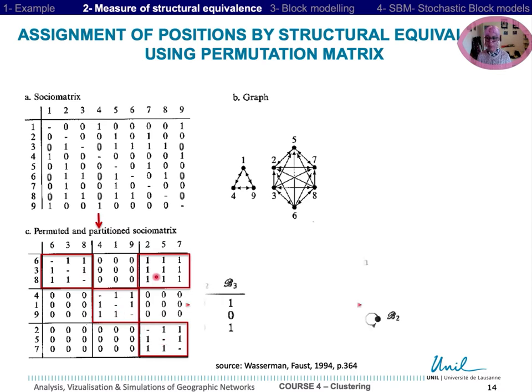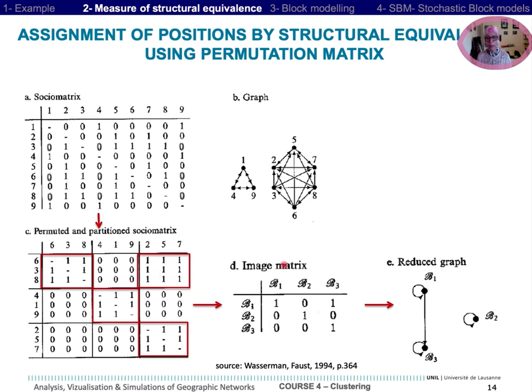One builds an image matrix about multi-relational networks between positions, rather than information about individual actors, and then we obtain a reduced graph between the different positions.